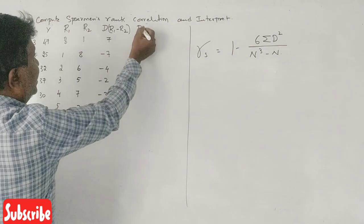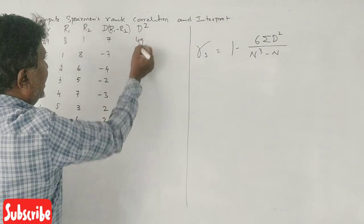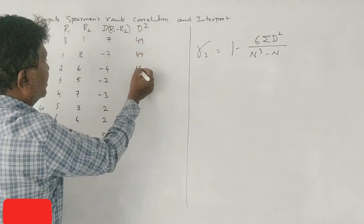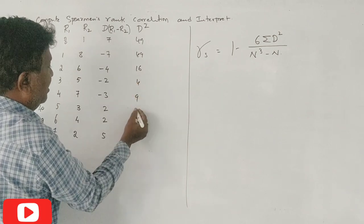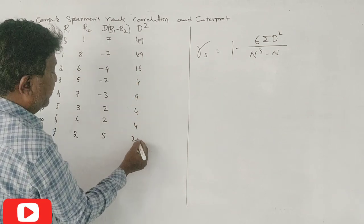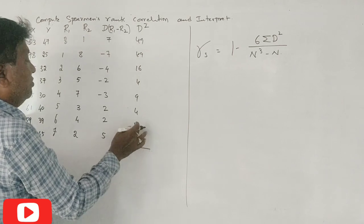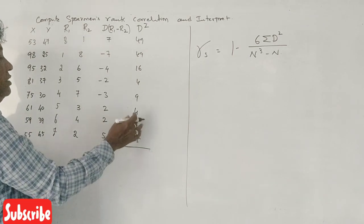This is D2. 49, 49, 16, 4, 9, 4, 4, 25. This is used to be graded. This means 5, 8, 9, 2.